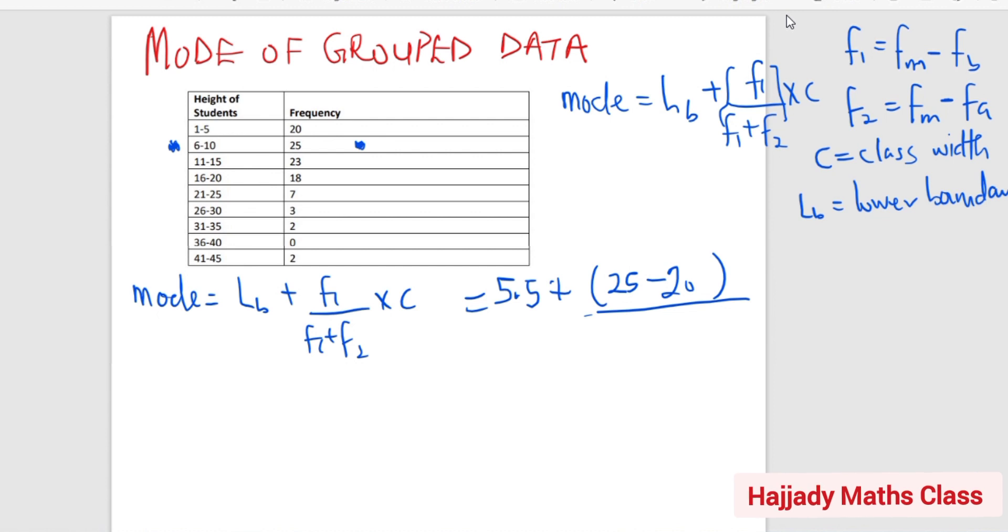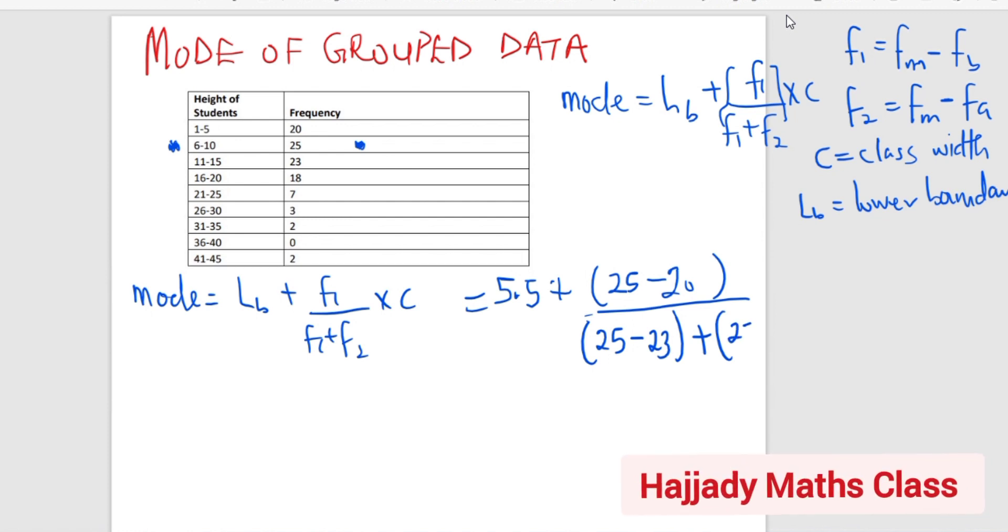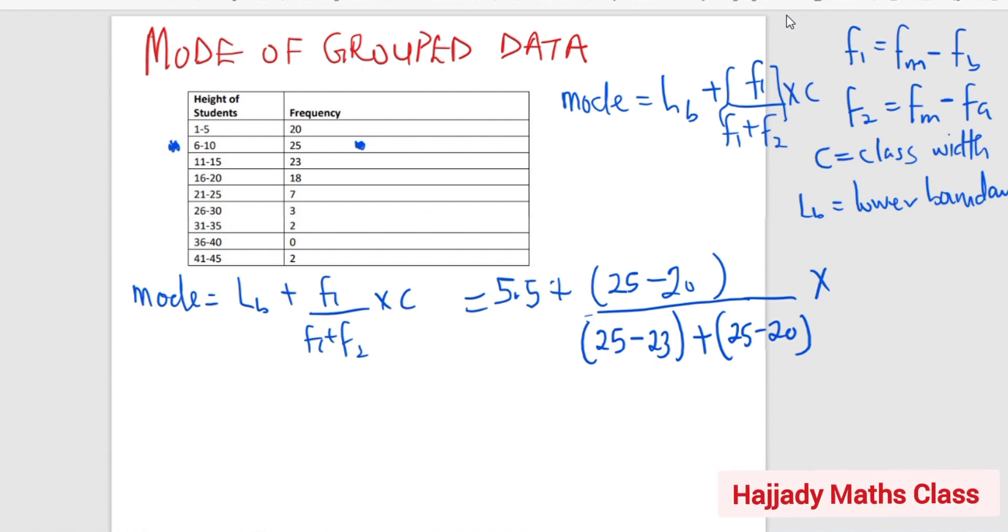Everything over F2, which is the frequency of the modal minus the frequency after it. And the frequency of the modal class is 25. The frequency after it is 23. That is my F2. My F1, I'm going to repeat this, which is 25 minus 20. Multiply by my class width, which is 5.